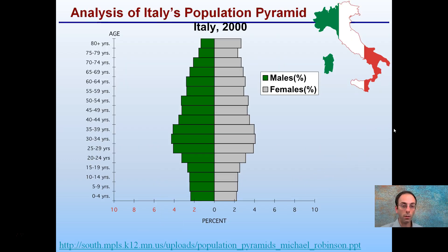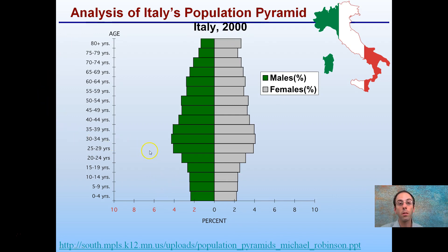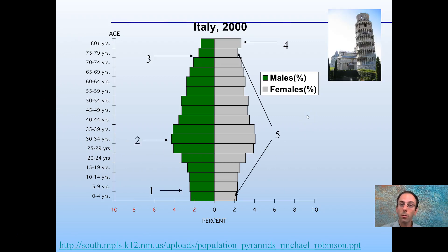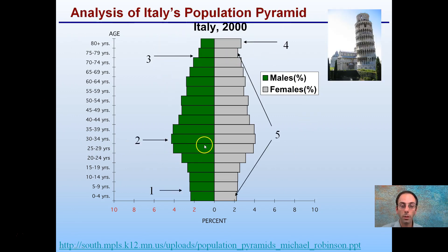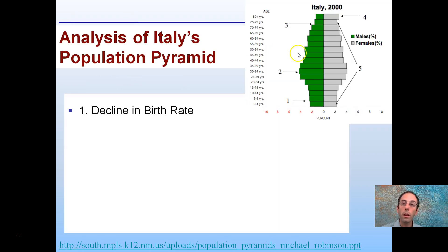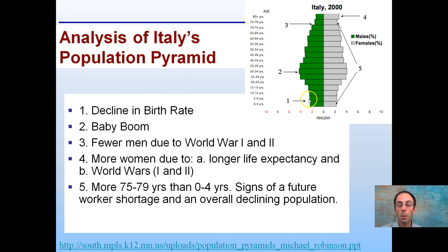We'll look at Italy in particular. Remember we have our males and our females. We're going to look specifically at this population and how things may change, using a resource that presents a great way to interpret these population pyramids. So Italy in 2000 — this graph stops out at 80 plus, the population over 80 years old. Looking at specific regions: area one points to a declining birth rate. Number two is something called a baby boom — this is the expanding population in this particular age group.